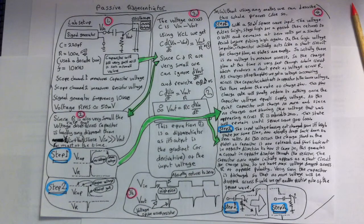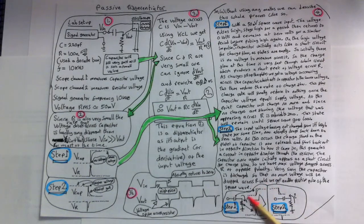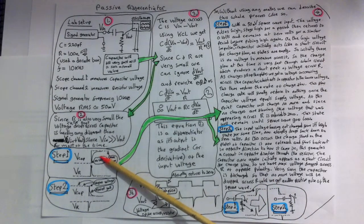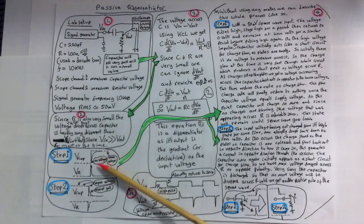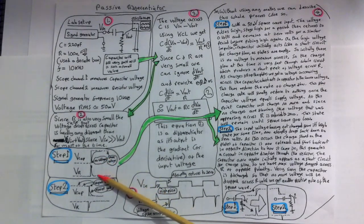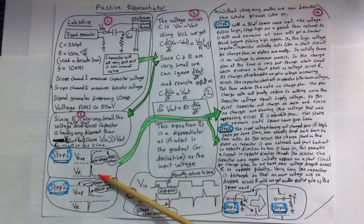This charge flow rate will finally reduce to nothing once the capacitor voltage equals the supply voltage. At this point, the capacitor will charge no more, and since no charges are flowing, the voltage that was appearing across R is now reduced to 0. So the voltage output is now at 0.